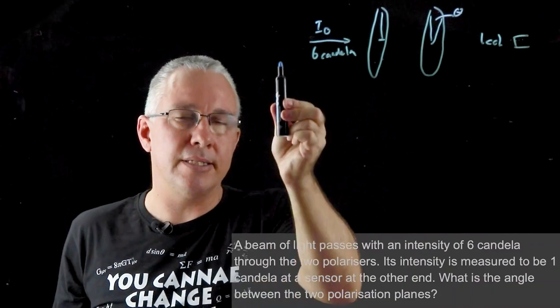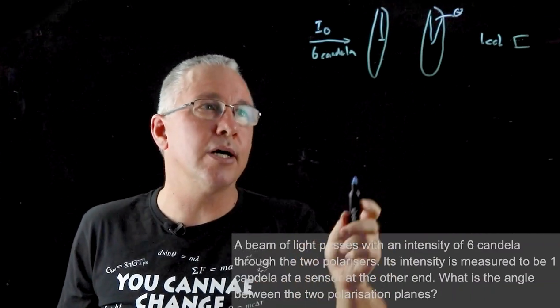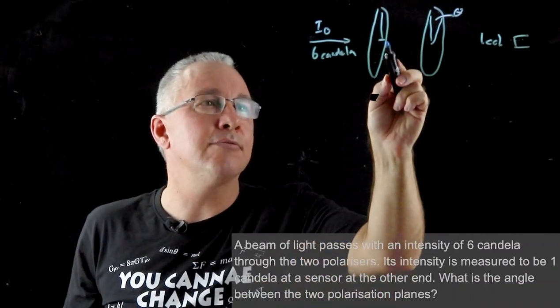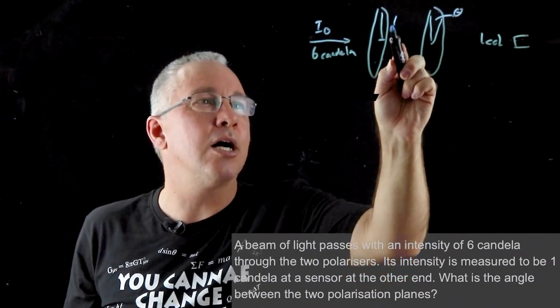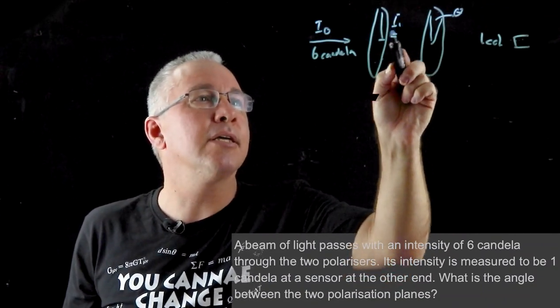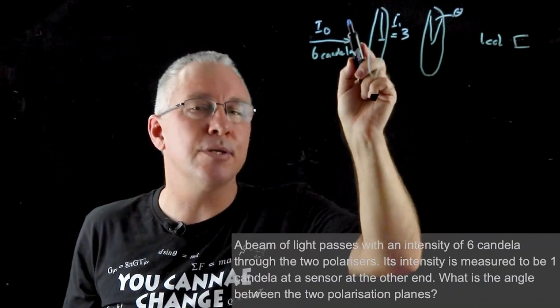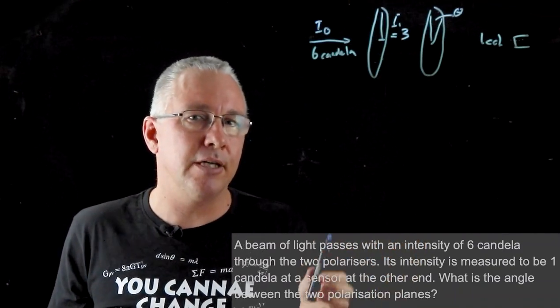The first thing to remember is that as it enters the first polarizer, the light intensity from here to here is half. So now what we have here is I1, and I'm going to give that a value of three because the polarizer cuts the intensity by a value of half.